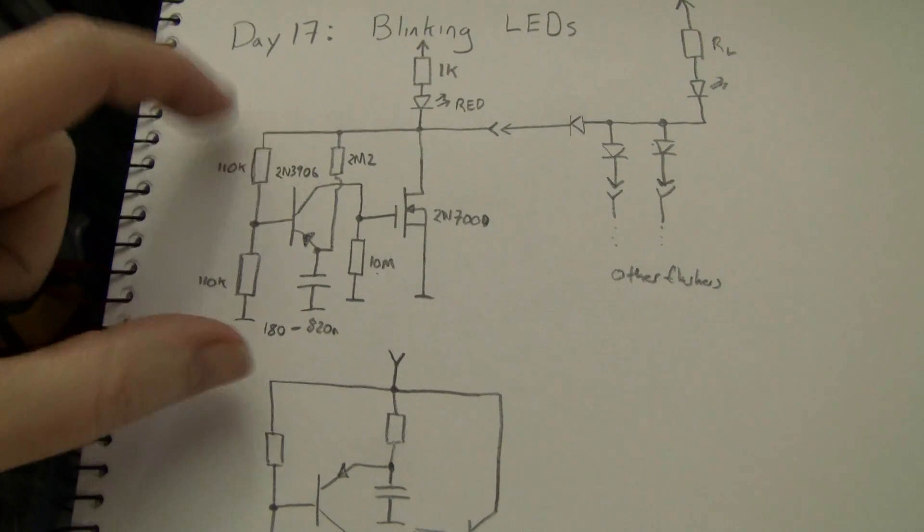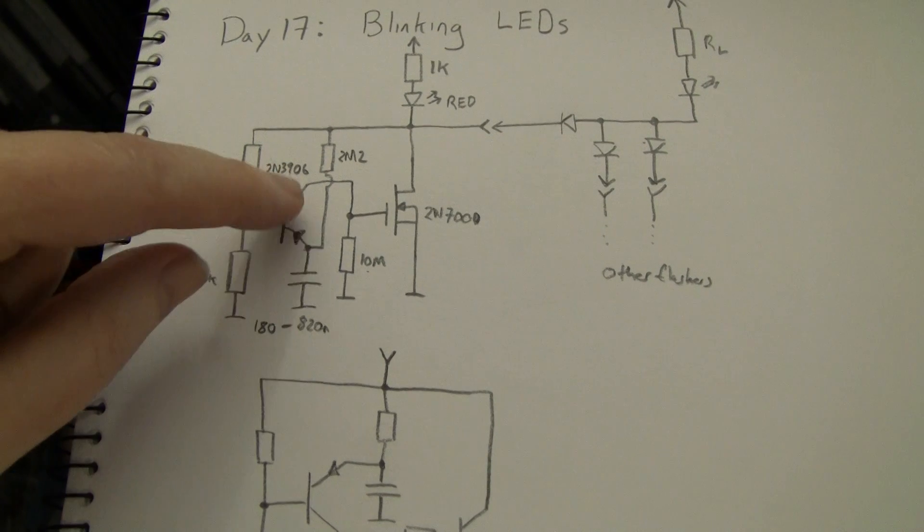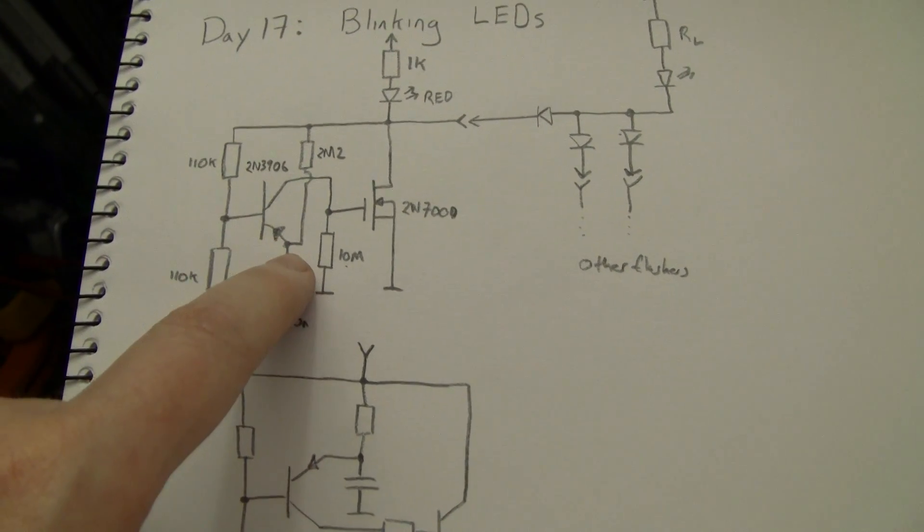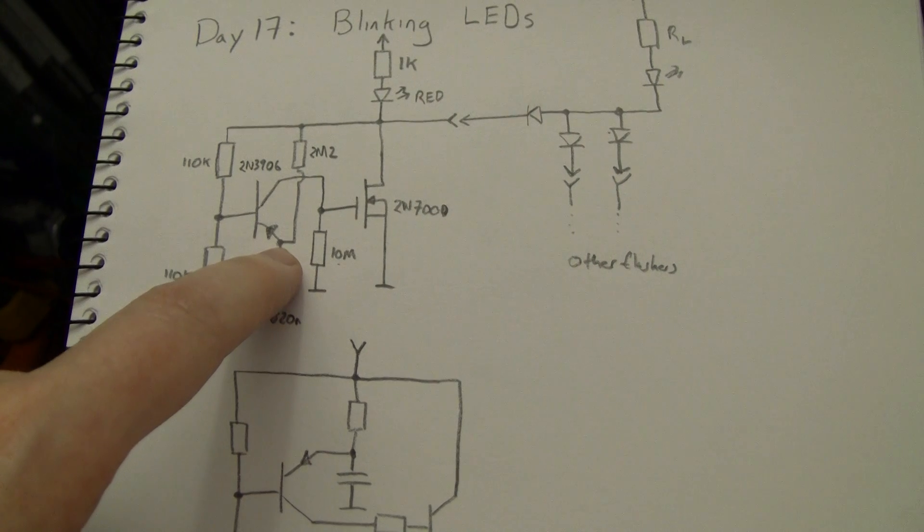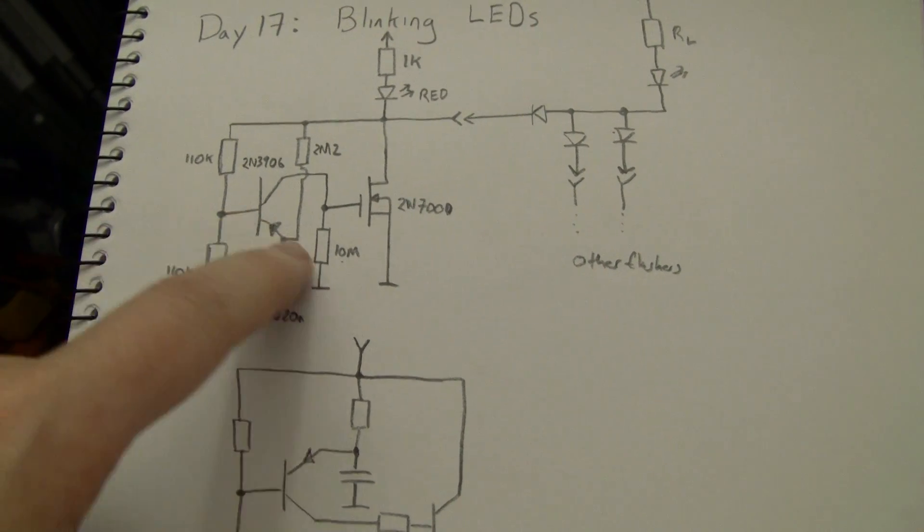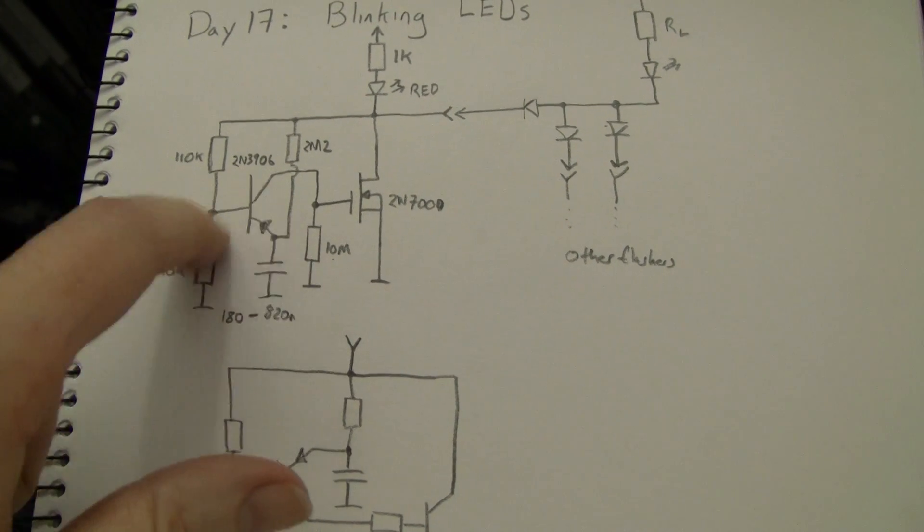So the voltage here is approximately mid-rail. I've selected these to be mid-rail, but you can change these values and it controls the exact set point. Eventually the emitter voltage rises to the point where the emitter base junction is forward biased and the transistor turns on.